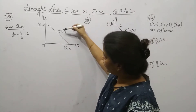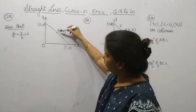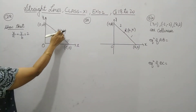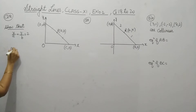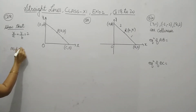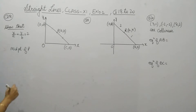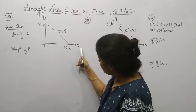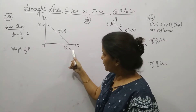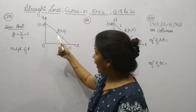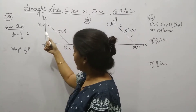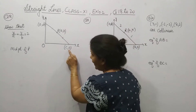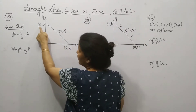Before that we will try to find out the coordinates of point P. So we will find out the midpoint of P. The coordinates we will try to find out. On the x-axis, let the coordinate be (c, 0). And where this line intersects the y-axis, its coordinate is (0, d).